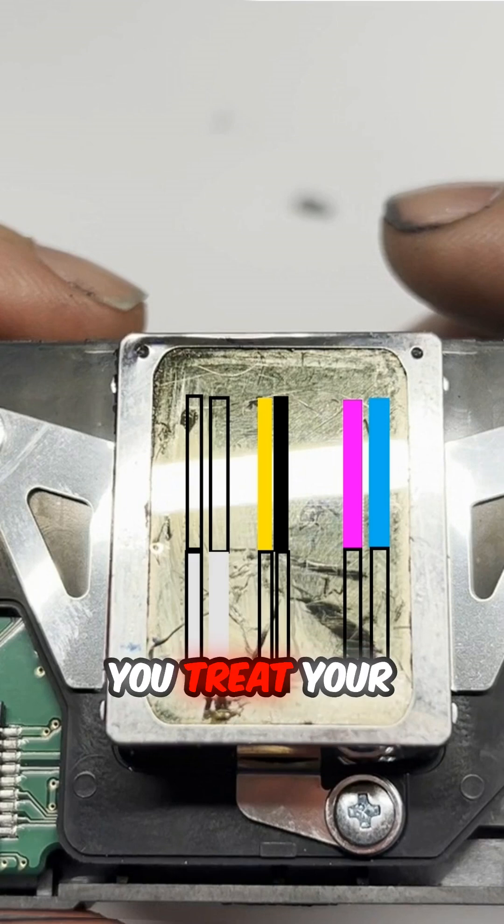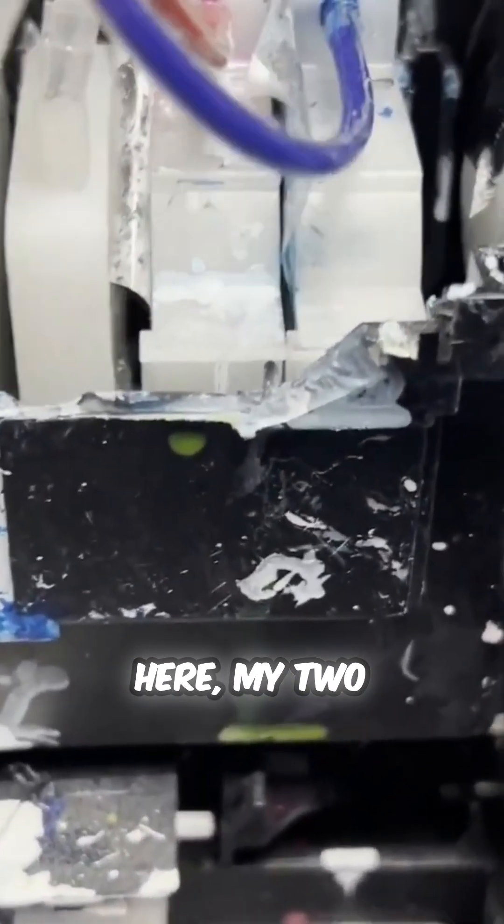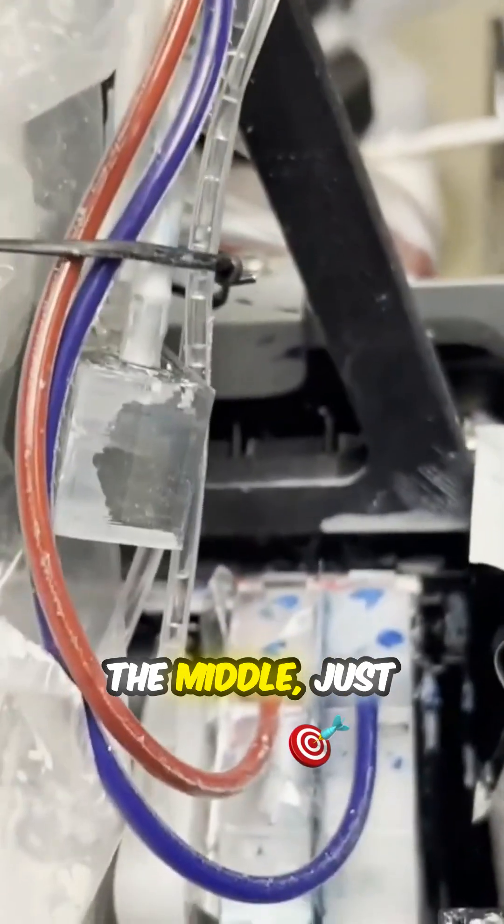So now you understand what that means. You treat your print head like a Corolla. Let me show you how to do it. Here, my two whites are in the middle, just like yours.